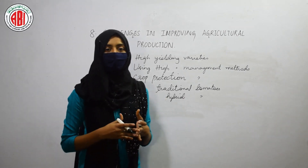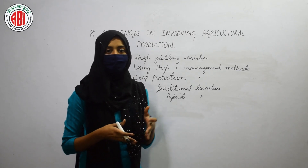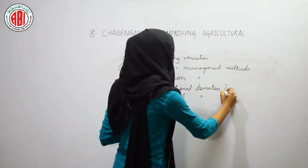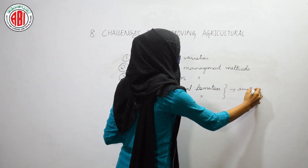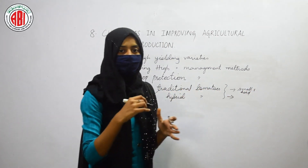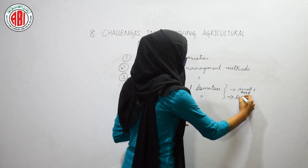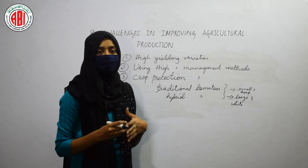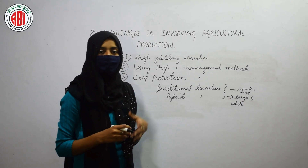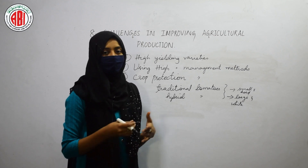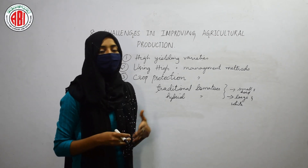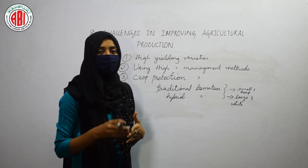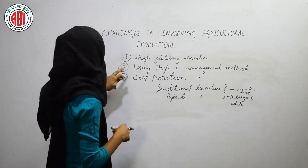Scientists are working to develop hybrid varieties of different crops. For example, they develop hybrid varieties of wheat. When we compare traditional wheat and hybrid wheat, the traditional ones are small and hard, while the hybrid varieties are large and white in color. Hybrid varieties can be preserved for a longer period of time, and this helps in increasing food production. Scientists are still trying to develop more hybrid varieties of different agricultural products.